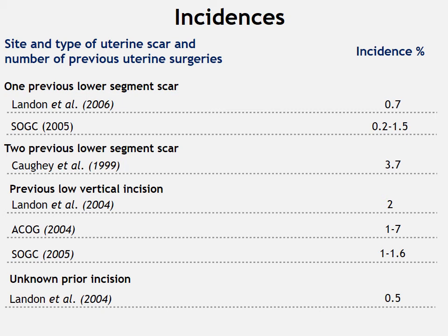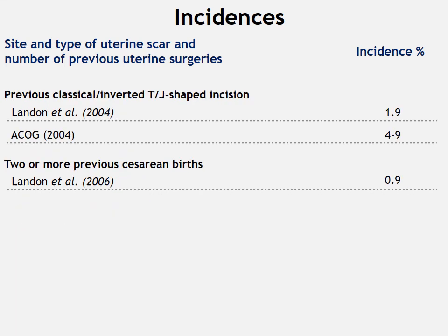The incidence of uterine rupture has been reported according to the site and type of uterine scar. The highest incidence involves two previous lower segment scars, with the highest reported incidence of 3.7%. For previous classical, inverted T, or J-shaped incision, the highest incidence reported is 4 to 9%.